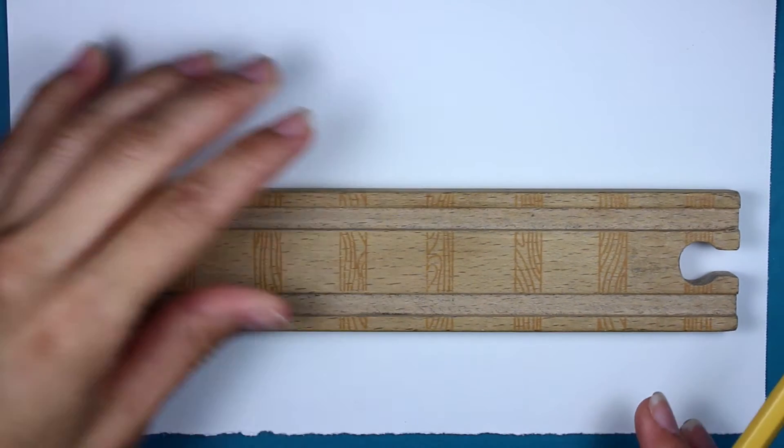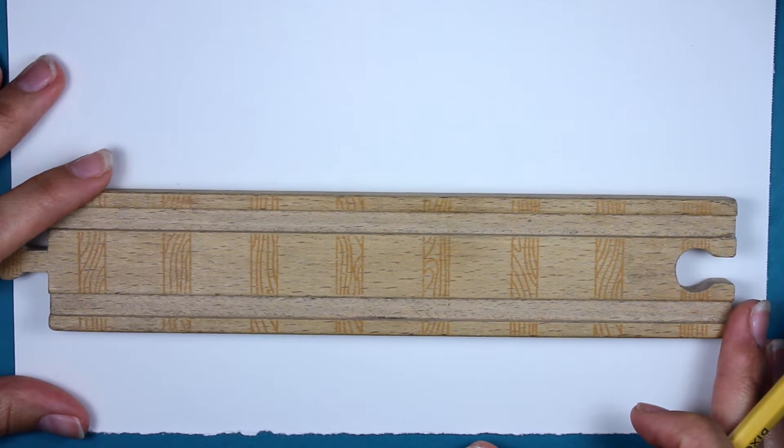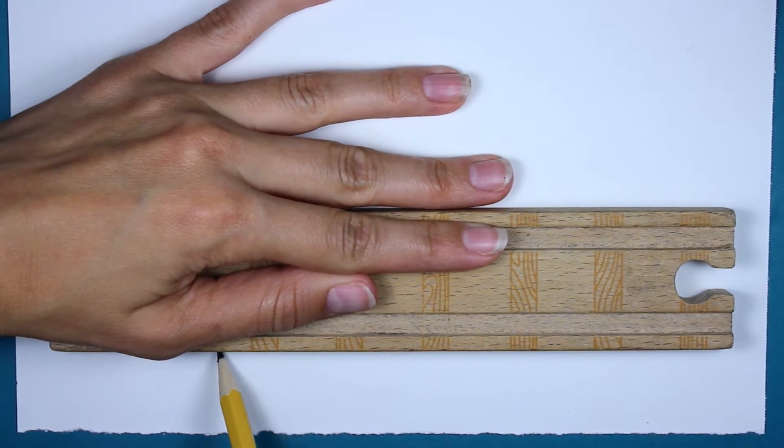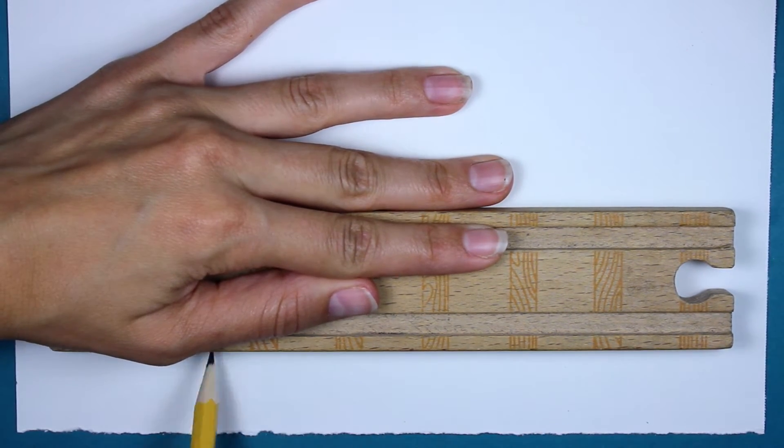Alright guys, let's go ahead and start off towards the bottom of our papers and we're going to work on the plate. So I'm going to take something with a straight edge like a train track or a ruler and I'm going to make a straight line coming across my paper. And this is the top of the plate.